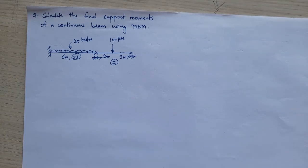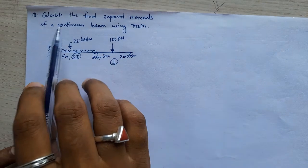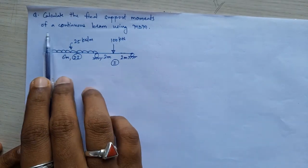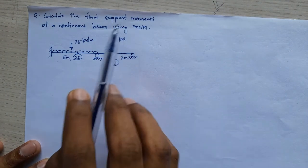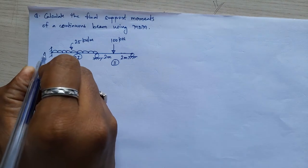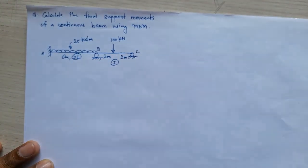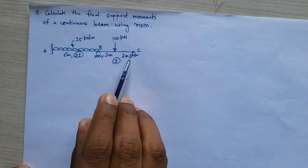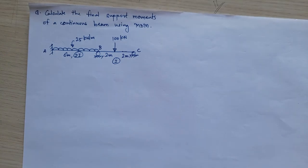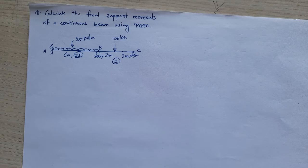We will start with the first numerical. It is asked to calculate the final support moments of a continuous beam using MDM — MDM is nothing but moment distribution method. A continuous beam ABC is given with certain loading. Joint A is fixed, while joints B and C are roller supports. As per these supports, you have to classify them into two types: capable support and incapable support, as we have seen in the last video lecture.